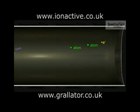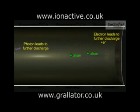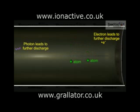Both these photons and dislodged electrons may be capable of causing reionization of the gas, triggering another avalanche, so that a single detection event could lead to a continuous discharge.